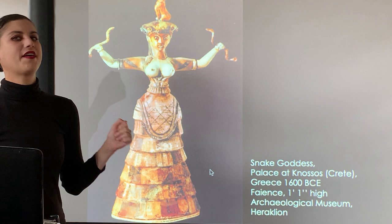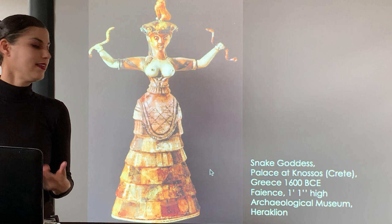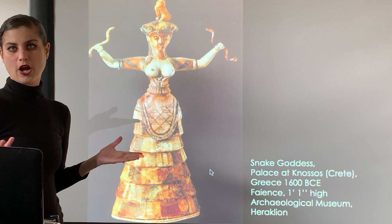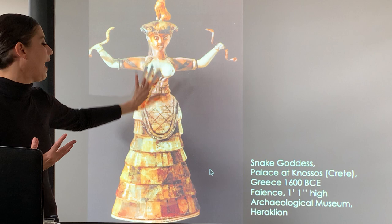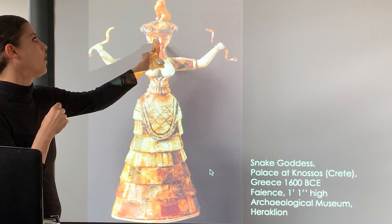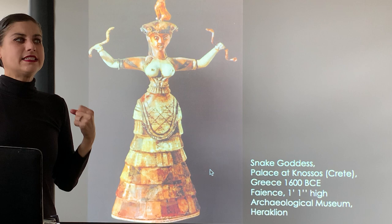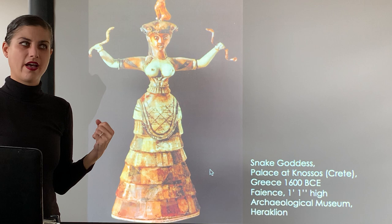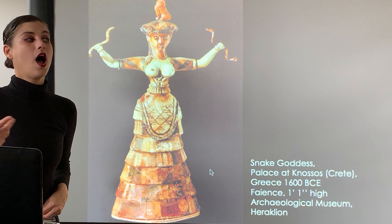The snake goddess is made of faience - a glass-like opaque silicate baked at high temperature creating an enamel-like, glazed appearance with rich dark color. She has super intense eyes, wields two snakes in her hands, and has a feline perched on her head, as if she's getting control over the animal world - possibly a witch, priestess, goddess, or superhuman figure.